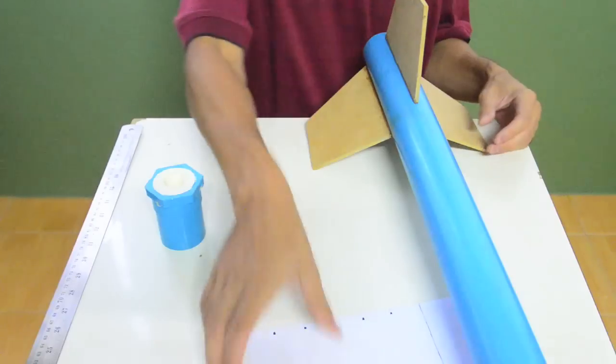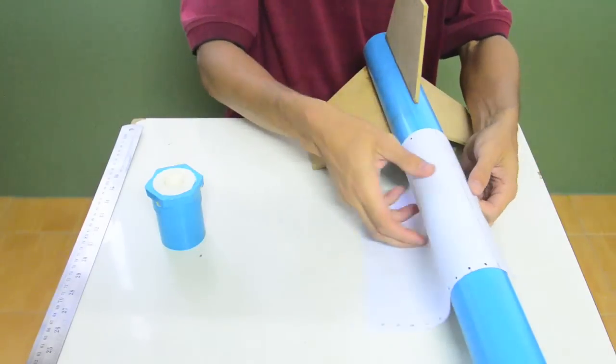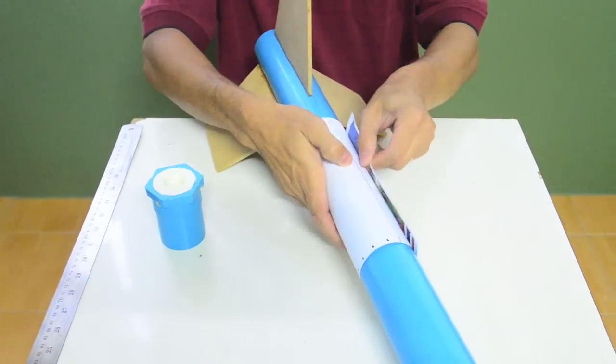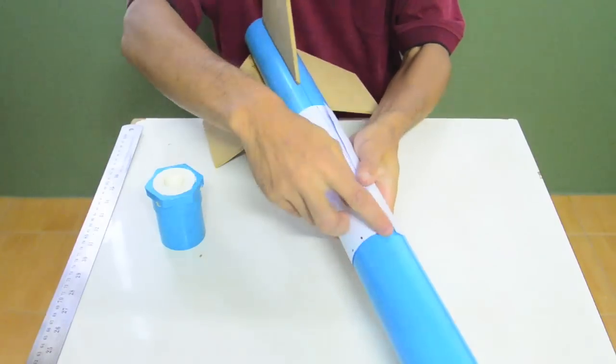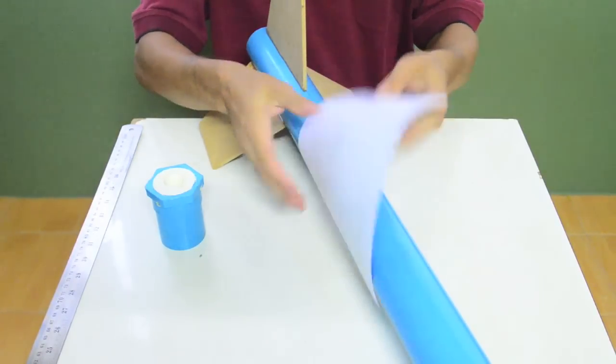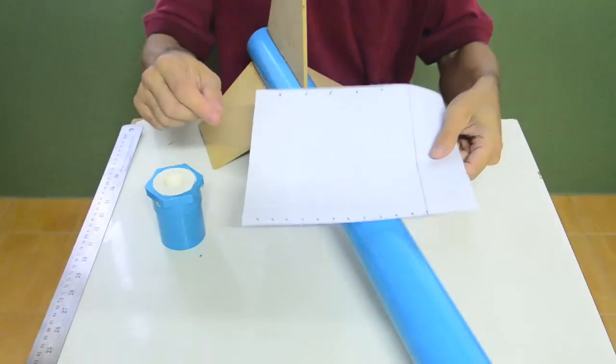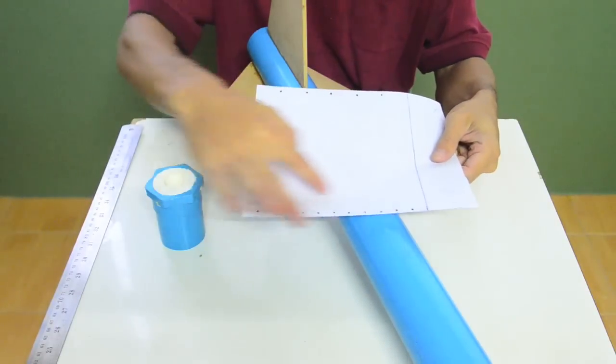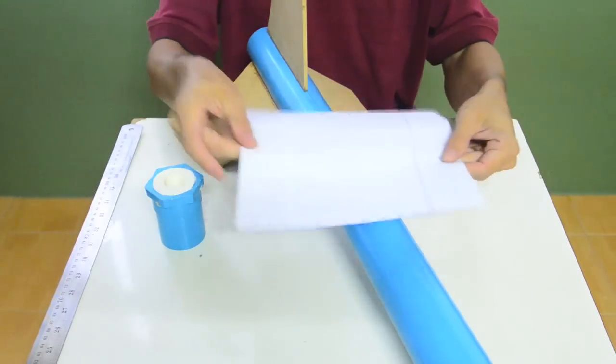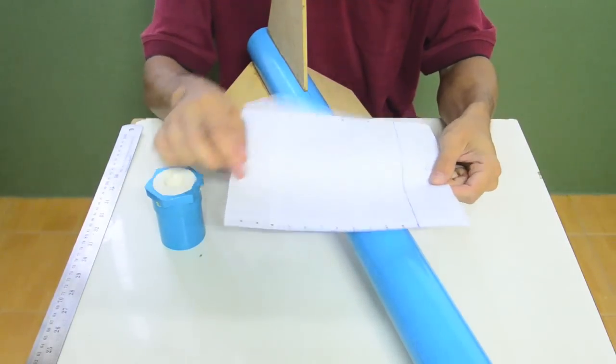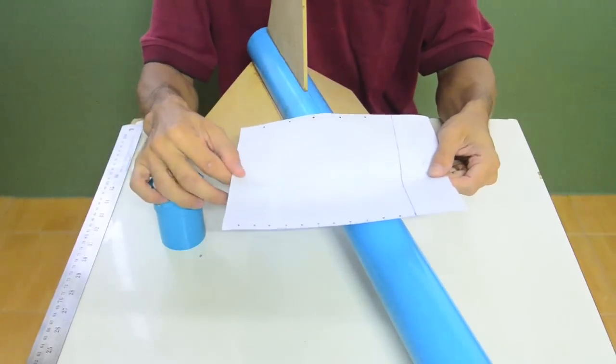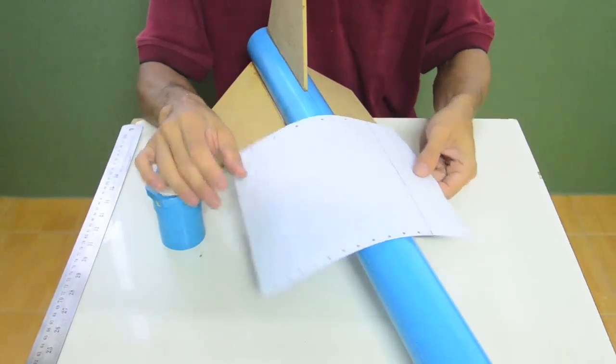So I've already put the fins on this airframe, and how I got the fins on and how I did it evenly was I took some computer paper, wrapped it around the airframe, then drew the line where that connects. I measured the distance, which would eventually be the circumference of the airframe, and it turned out to be 190 millimeters. Divided by three is about 63.